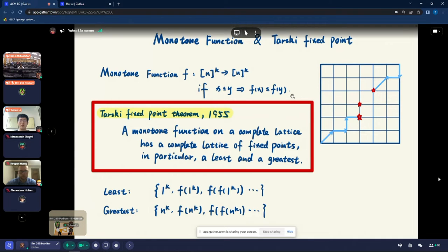In 1955, Tarski proved a fixed point theorem that says a monotone function on a complete lattice has a complete lattice of fixed points, in particular, a least and a greatest fixed point. This can guarantee the existence of fixed points, but furthermore, it can guarantee there is a least and greatest.